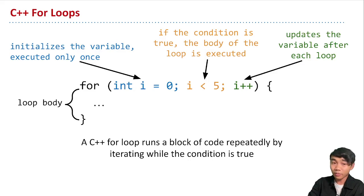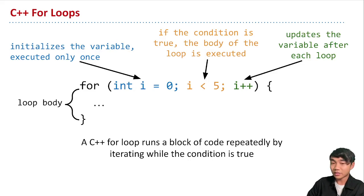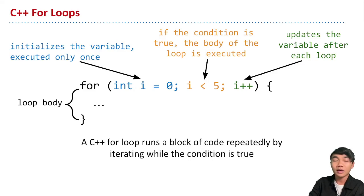At some point, after some number of updates, the condition will be false and we stop repeating our code and exit the loop. Because i starts at zero and we add one every iteration, and the condition is while i is less than five, eventually i will equal five. Once i equals five, it won't be less than five anymore — the condition will be false, we stop repeating, and we exit the loop, continuing with any statements that come after the closing curly brace.